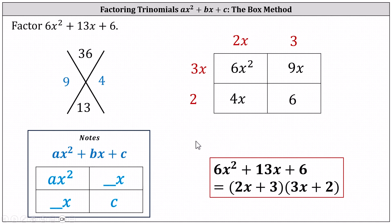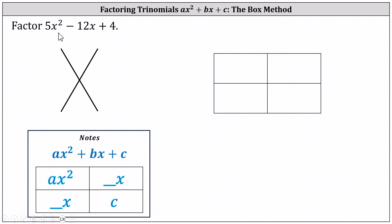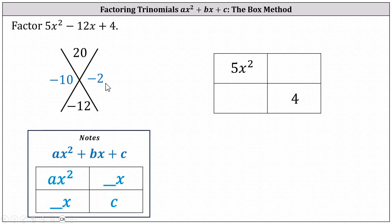Let's look at our third example. We want to factor 5x squared minus 12x plus 4. We first place 5x squared and 4 along the main diagonal. Next we determine the factors of a times c that add to b. a times c is 5 times 4, or 20, and b is negative 12. The factors of 20 that add to negative 12 are negative 10 and negative 2, which means for negative 12x, the middle term, we use negative 10x and negative 2x in the box along the other diagonal.